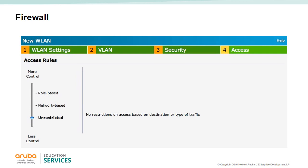The last window in the wireless LAN wizard is the access window — the firewall — where you determine the access level for users. You have three choices: unrestricted, which is a totally open SSID equivalent to an any-any-any permit rule; network-based, which includes rules for all devices associated to this SSID; and role-based, where configured roles with rules can be assigned to devices on this SSID, typically requiring an external server. The firewall will be explained in more detail in another module.